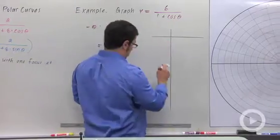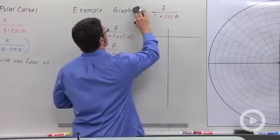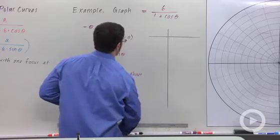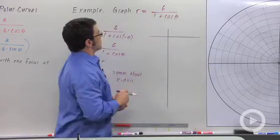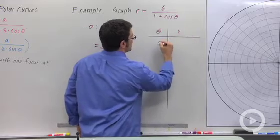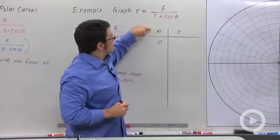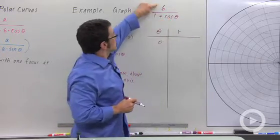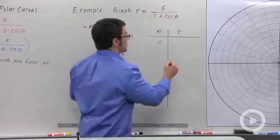Let's plot some points. This should be r equals r. There we go. So theta and r. Let's start with 0. When theta equals 0, cosine of 0 is 1. So it's 6 over 1 plus 1, 6 over 2, which is 3.